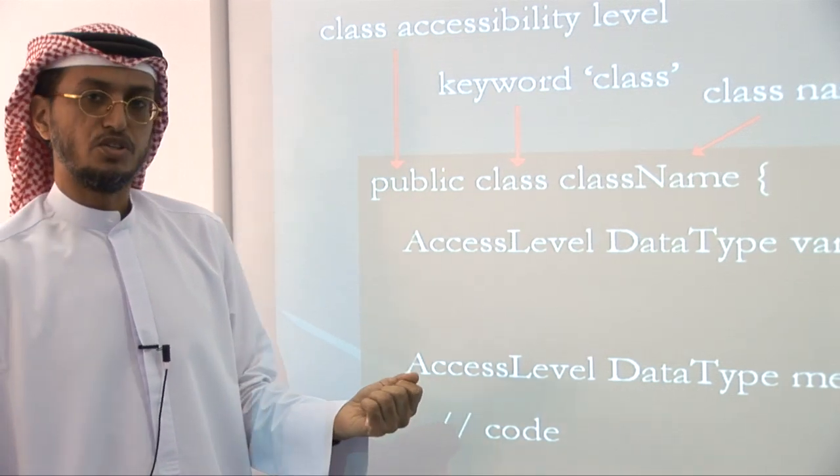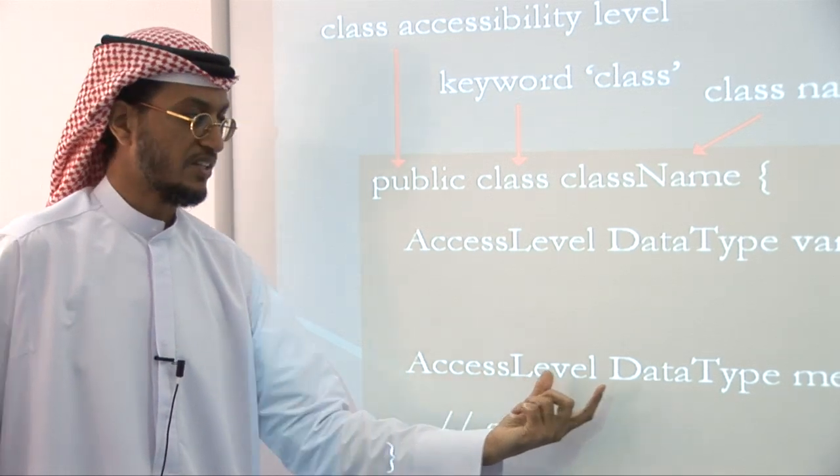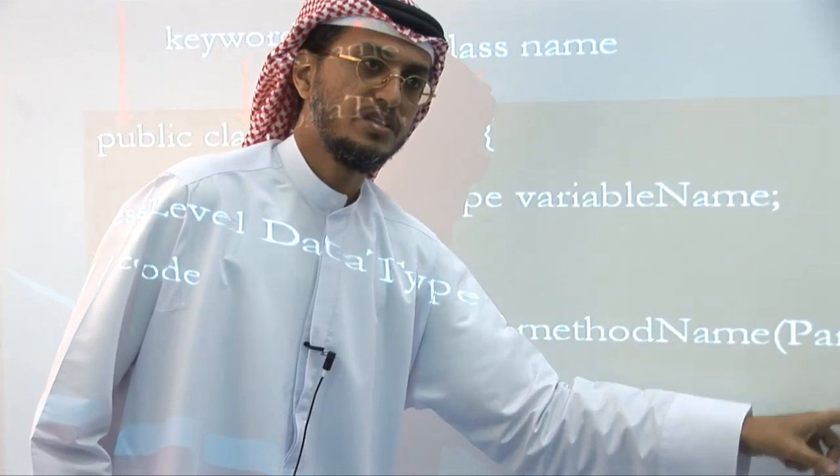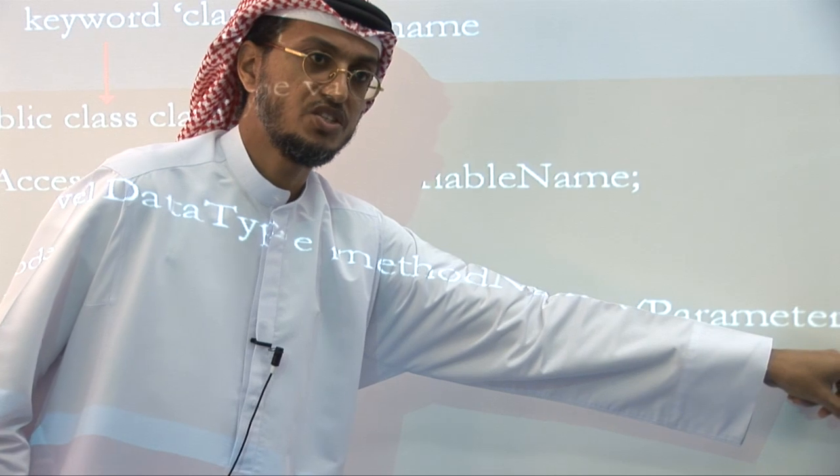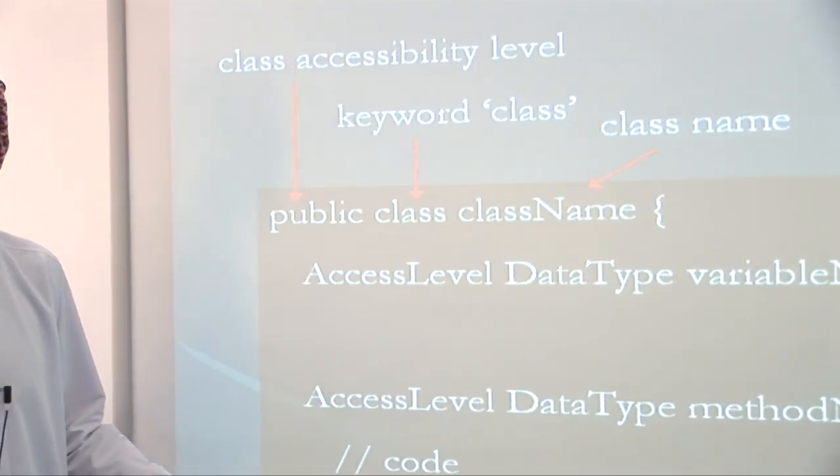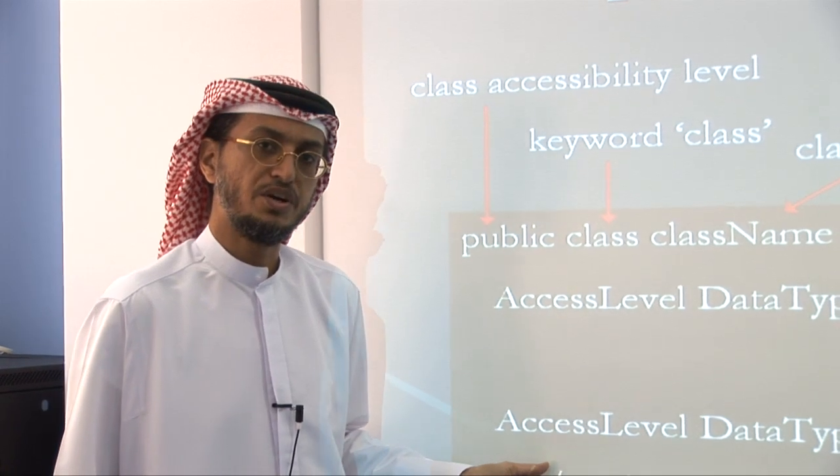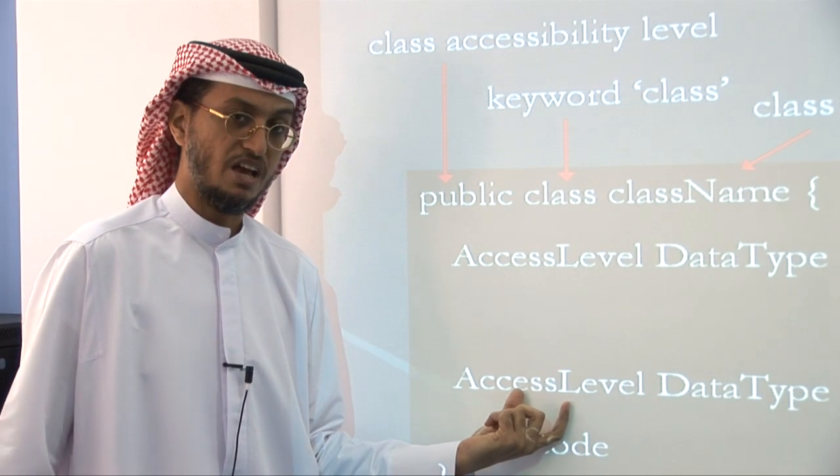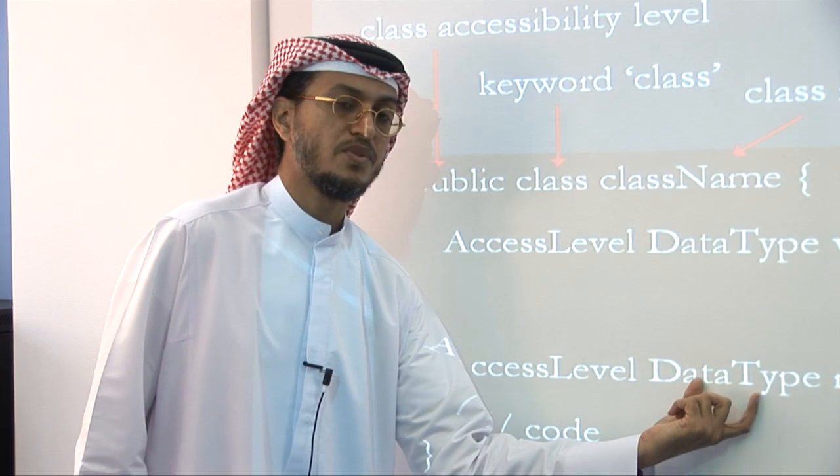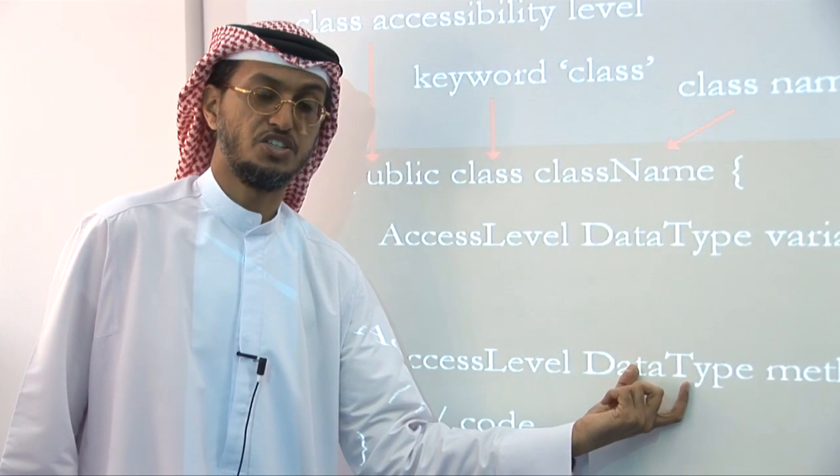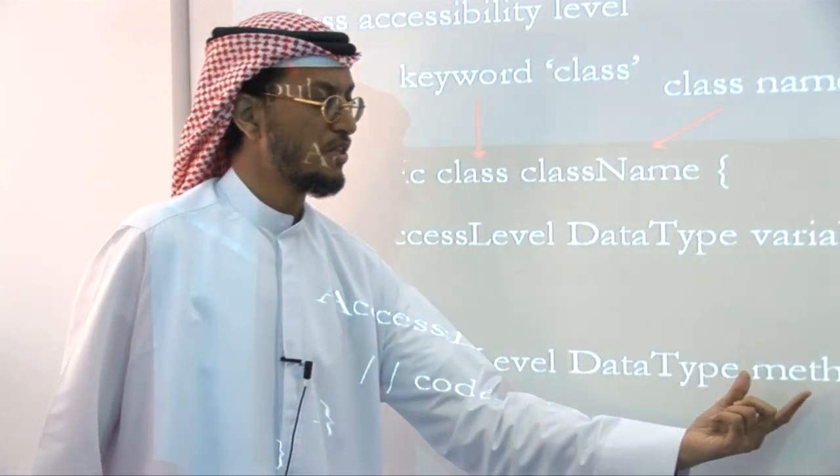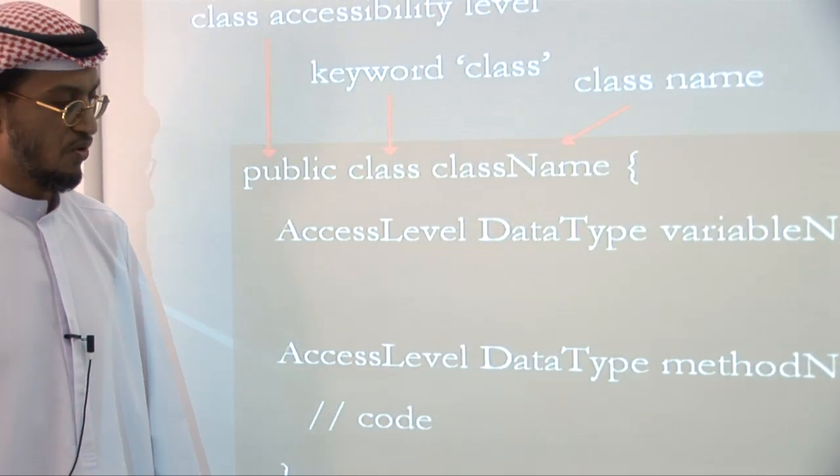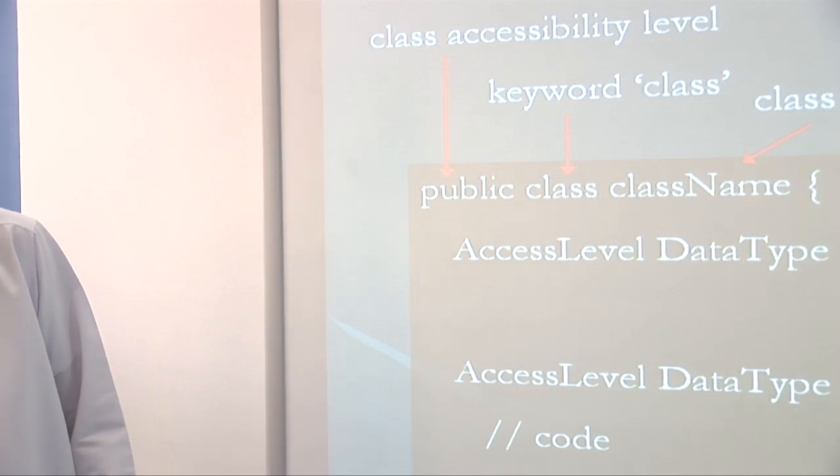The methods: when you write the methods that represent the behavior of the class, you specify the access level, data type, and method name, and some list of parameters within the method. The method starts with an opening curly brace and ends with a closing curly brace. Whatever you write within these two curly braces is called method definition. Access level: is it public, private, default, or protected? Data type: what does this method return? Does it return a string, does it return an integer, does it return an object? Method name is the name you give it to the method. Parameters: what does this method receive? Details as we go further in the subject, we'll get more information.